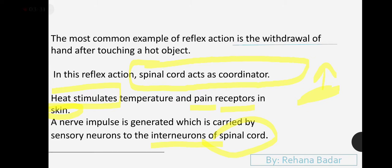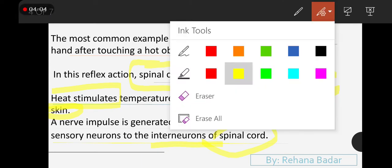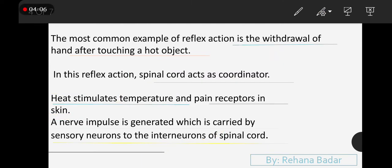I am going to repeat this once again. What happens basically in this situation? Your withdrawal of hand after touching a hot object, what is it? Reflex action. What happens? Spinal cord acts as coordinator. Heat and temperature are the stimulus. Pain is received by your skin. Nerve impulses are generated by sensory neurons and interneurons in the spinal cord, which produce the result.